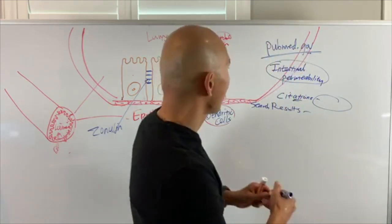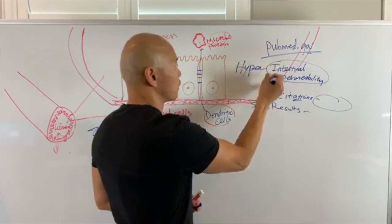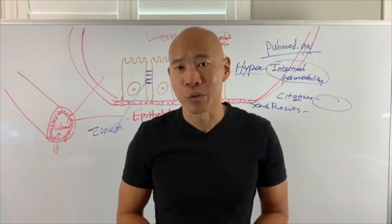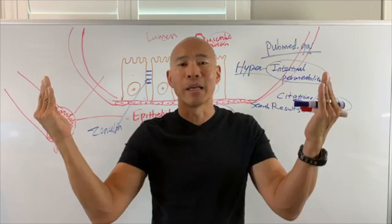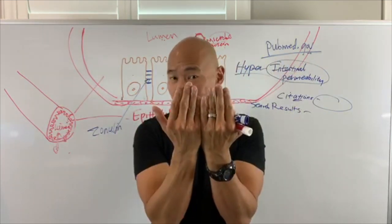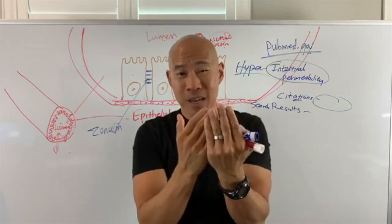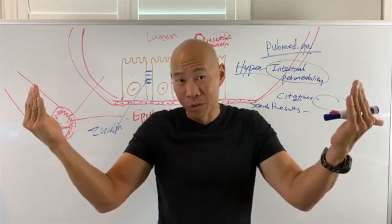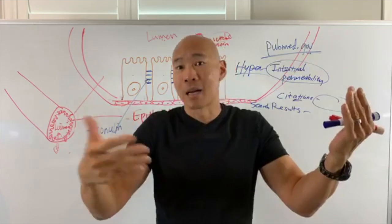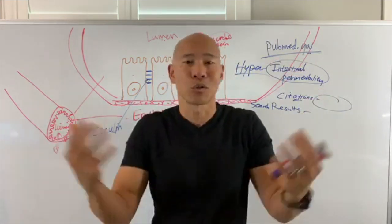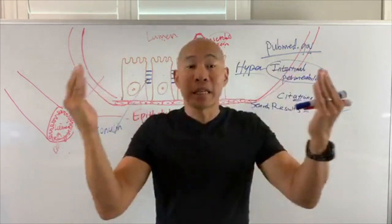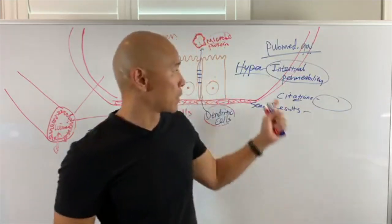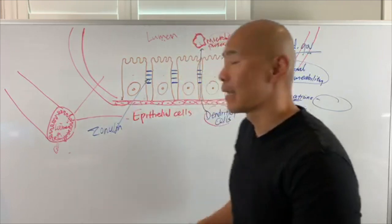Hyper leaky gut — hyper intestinal permeability — is too much. Think of the elevator door: when you walk into your grocery store, the electric door opens and shuts behind you. That's normal. But if the door gets stuck open all the time, bugs and animals and dust just come in and out — the store is chaos. So when you have leaky gut that's normal as long as it closes back up. When it's stuck open, that's when you have problems — that's hyper intestinal permeability.